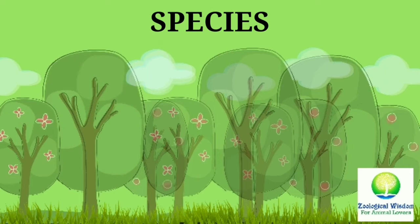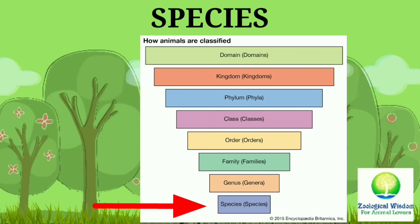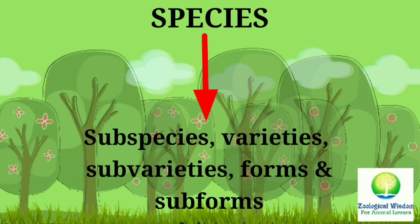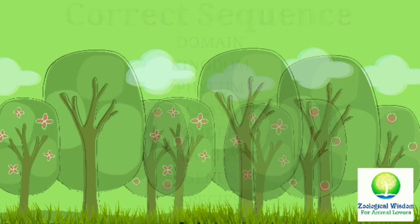Species was introduced by John Ray in taxonomy in 1693. It is the smallest rank and basic unit of taxonomic classification. A genus may include one or more species; subcategories of species include subspecies, varieties, sub-varieties, forms, and sub-forms. The correct sequence for taxonomy is: Domain, Kingdom, Phylum, Class, Order, Family, Genus, Species.